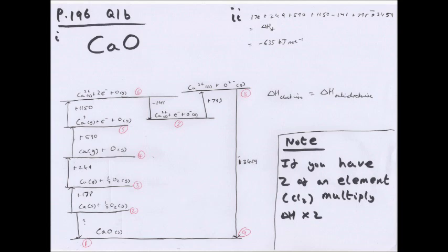Adding all the clockwise values gives the enthalpy change of formation: 178 + 249 + 590 + 1,150 − 144 + 798 − 3,459 = ΔH_f = −635 kJ mol⁻¹. On the diagram I didn't include units to save space, but in the exam make sure you do.